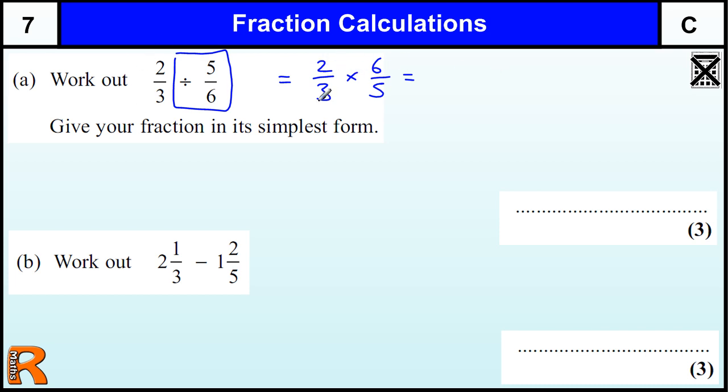So then we multiply the tops and the bottoms. The easy bit in fractions is multiplying fractions. So we get 2 times 6 is 12, and 3 times 5 is 15. And then we're asked to give it in the simplest form, so we divide the top and bottom by numbers that go into both. So 2 doesn't go into both, so 3 will give us 4 and 5. So 4 fifths for 3 marks.